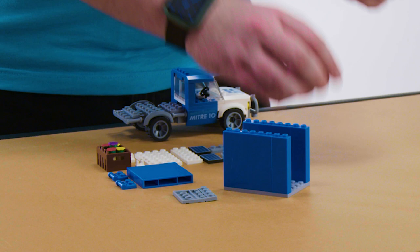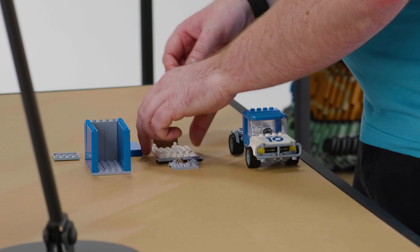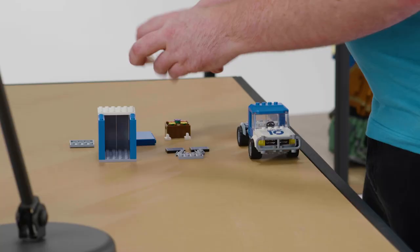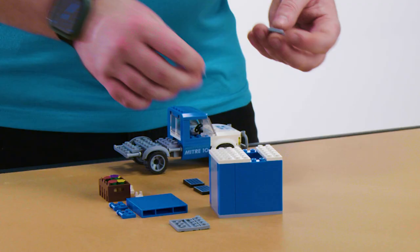We're then going to take our two grey bricks and close off one of the ends of the container. You can then grab one of our large white panels and attach that as well as grabbing our smaller panel for the opposite side.